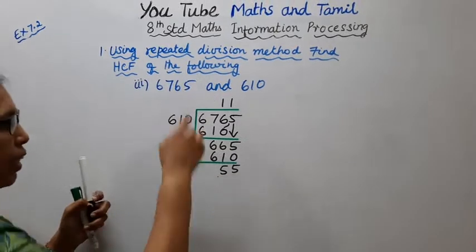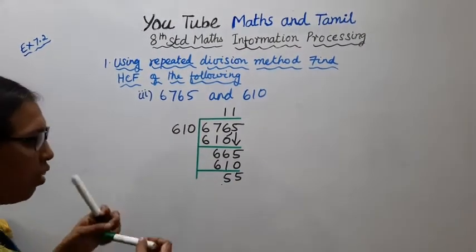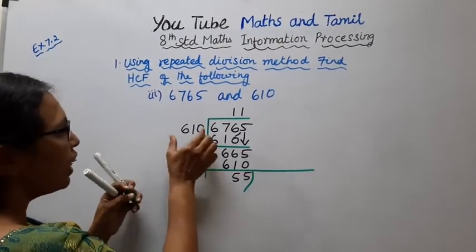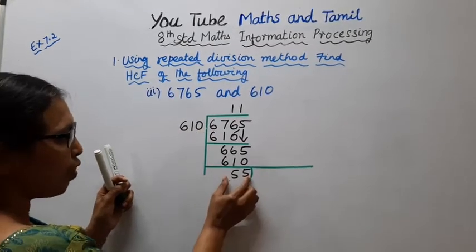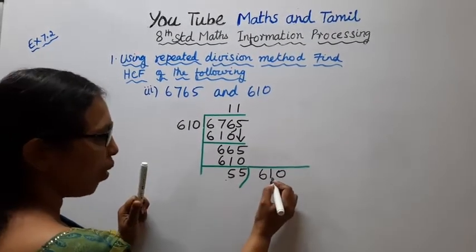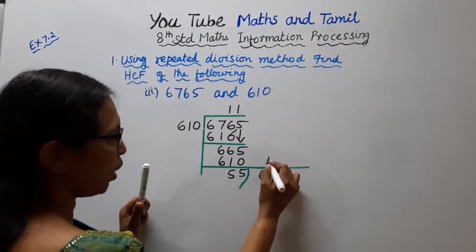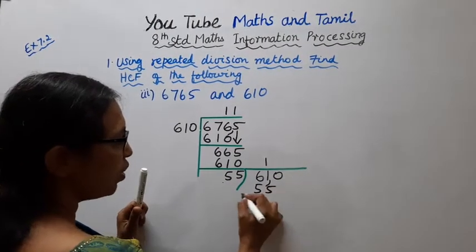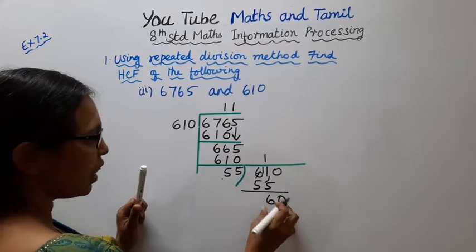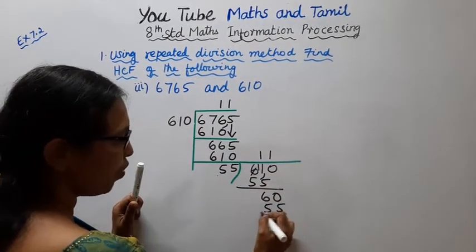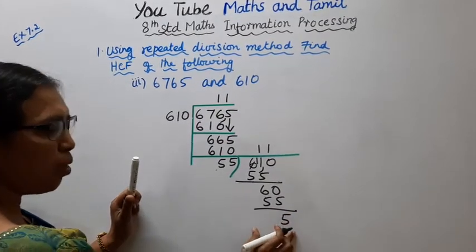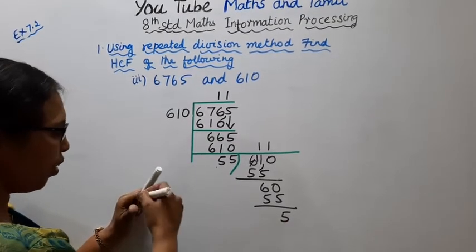Using the repeated division method, we continue until remainder becomes 0. Now divide 610 by 55. 60 divided by 55 is 1 time. 1 into 55 is 55. Now 60 minus 55 gives 5. So the remainder we get is 5. The remainder is not 0 yet.